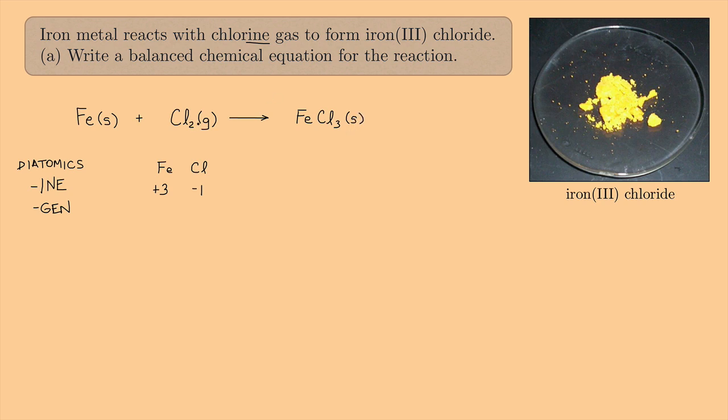Now we have to balance it. So let's see. What can we start with? How about the irons? The irons are already balanced. There's one iron here and one iron here. So that's easy. How about the chlorines? There's two chlorines here, three chlorines here.